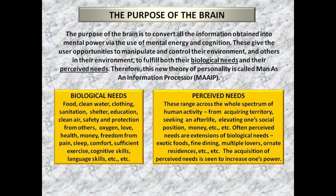The purpose of the brain is to convert all the information obtained into mental power, via the use of mental energy and cognition. These give the user opportunities to manipulate and control their environment and others in their environment, to fulfill both their biological needs and their perceived needs. Therefore, this new theory of personality is called Man as an Information Processor — MAIP.